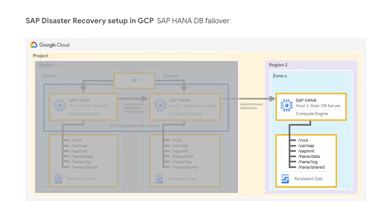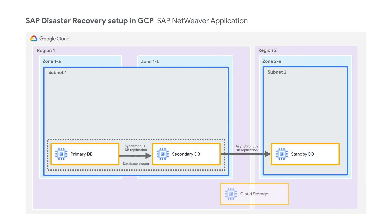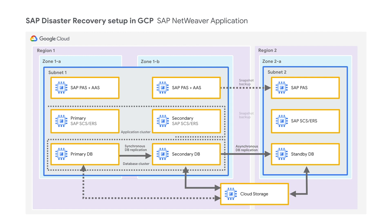Depending on the application and databases involved, there are several ways of replicating data and corresponding application configuration from the primary site to the DR site. As an example, if you're using SAP HANA as the database, there is built-in replication — referred to as HSR or HANA System Replication — available that will help with this process. HSR will not only replicate data in the database, but will also help with database configuration and other items. In case of other traditional databases like SAP ASE, a log shipping mechanism can be used to send data over to the DR site. In case of application servers, you can use Google Cloud Storage snapshots to help with this process.